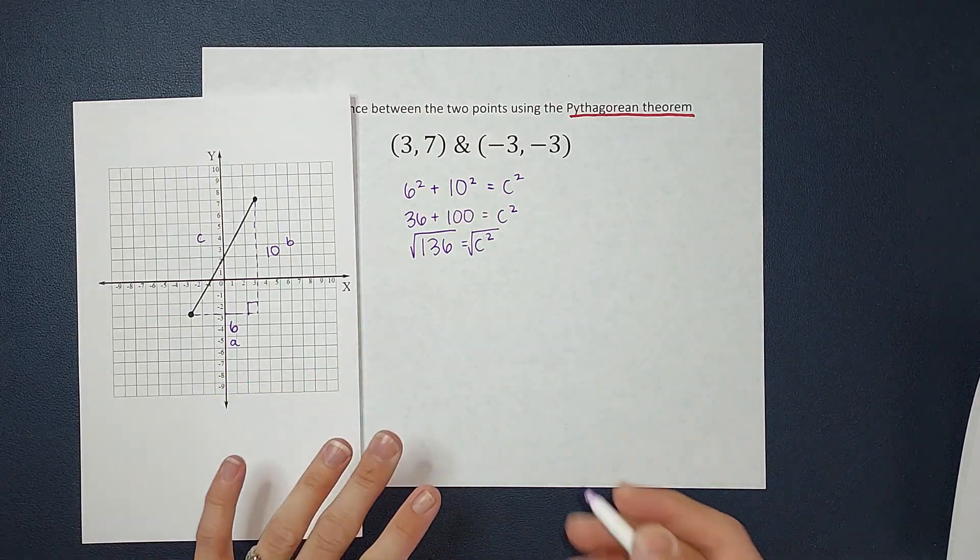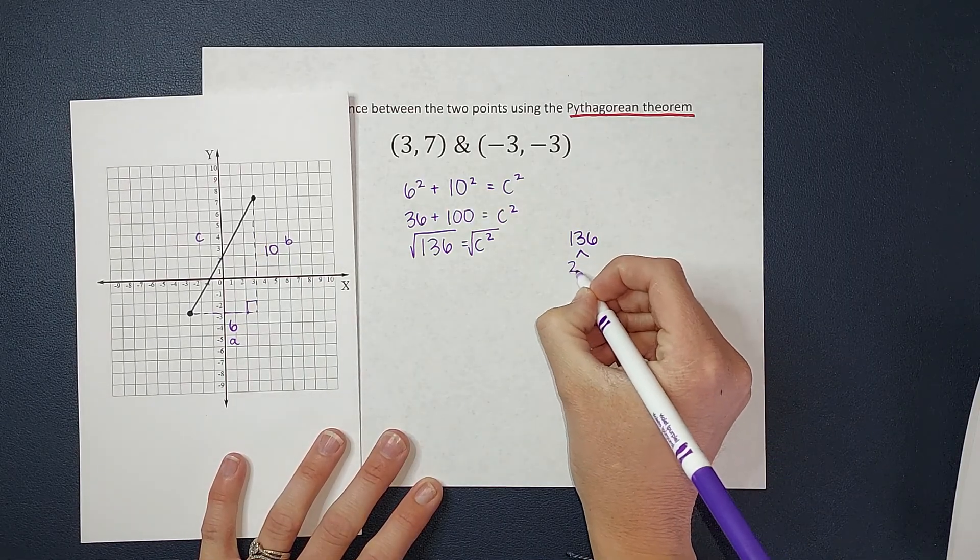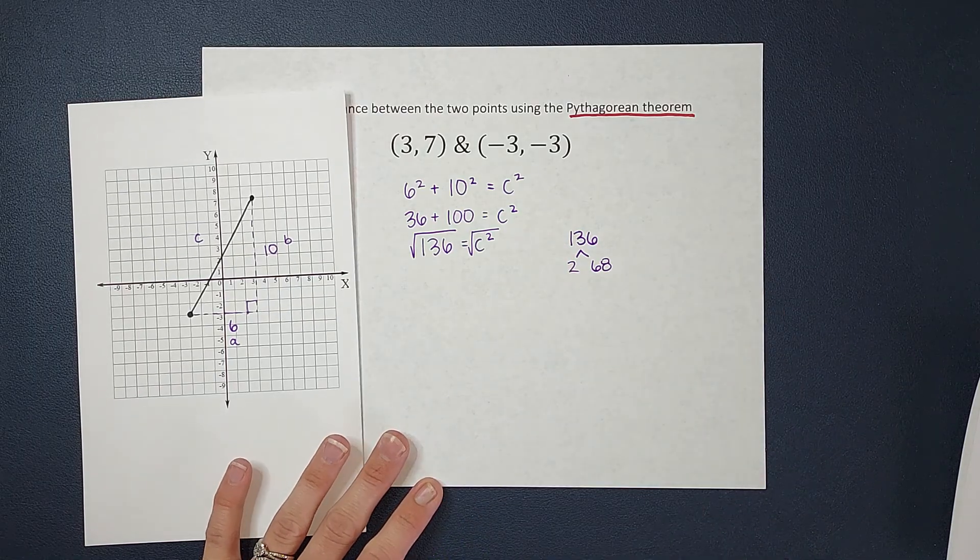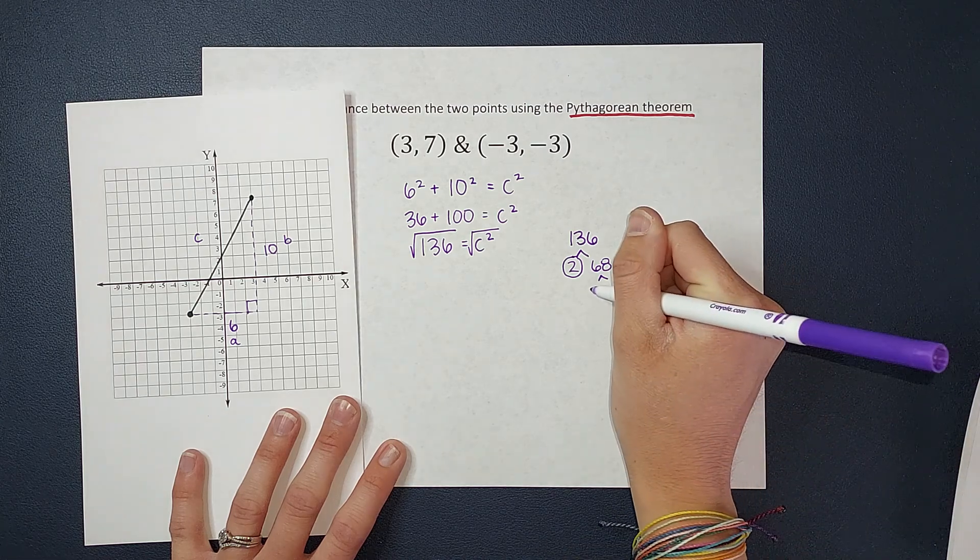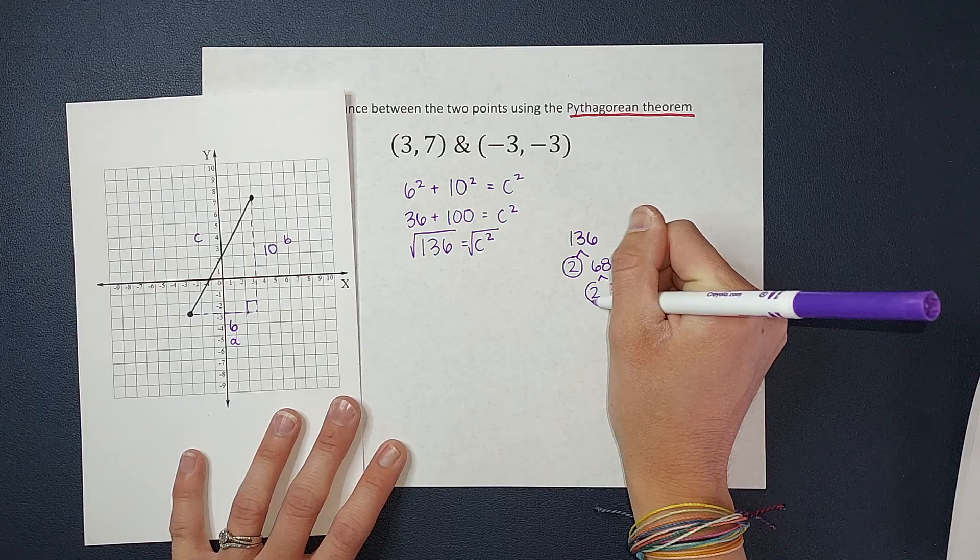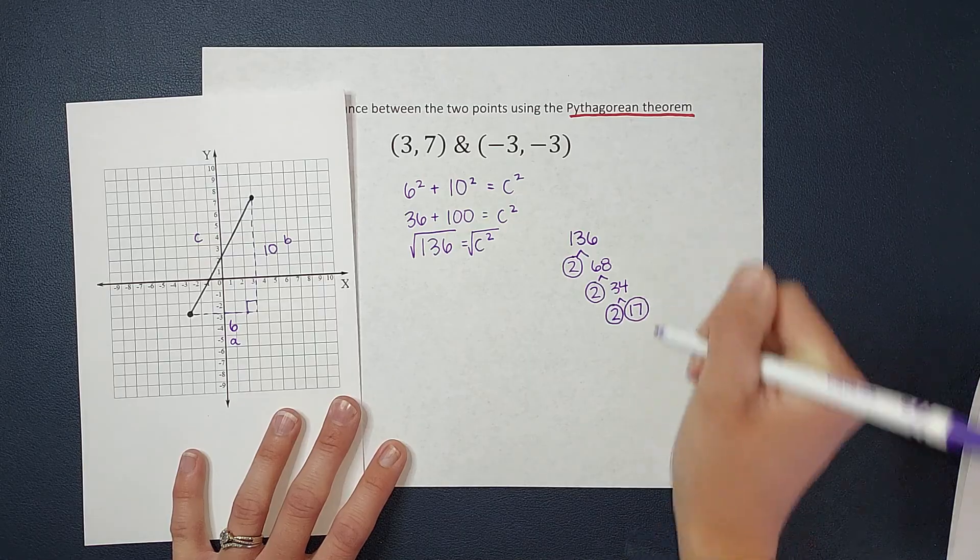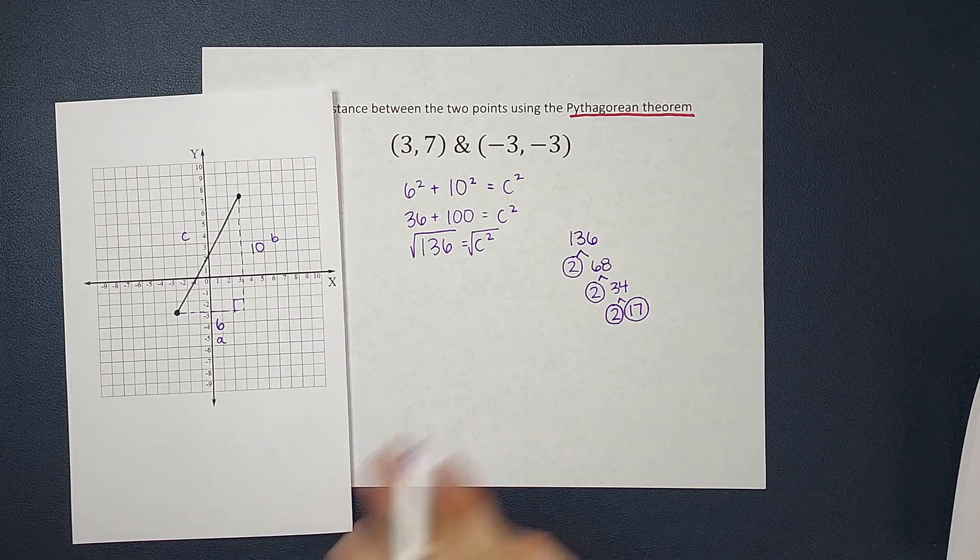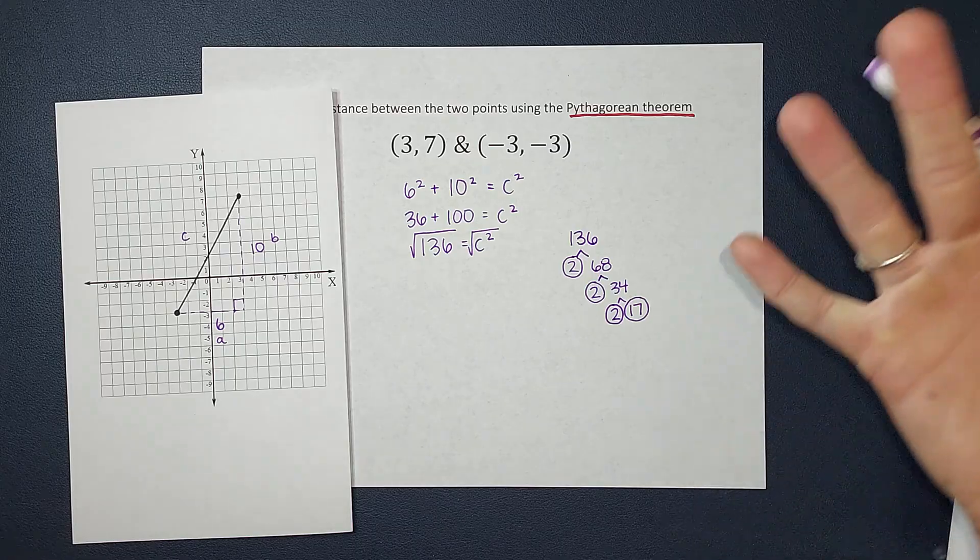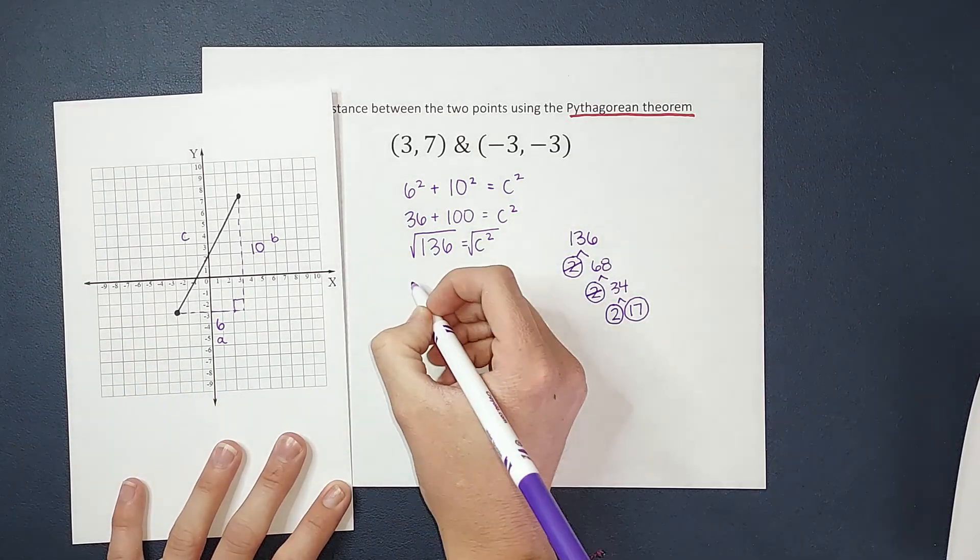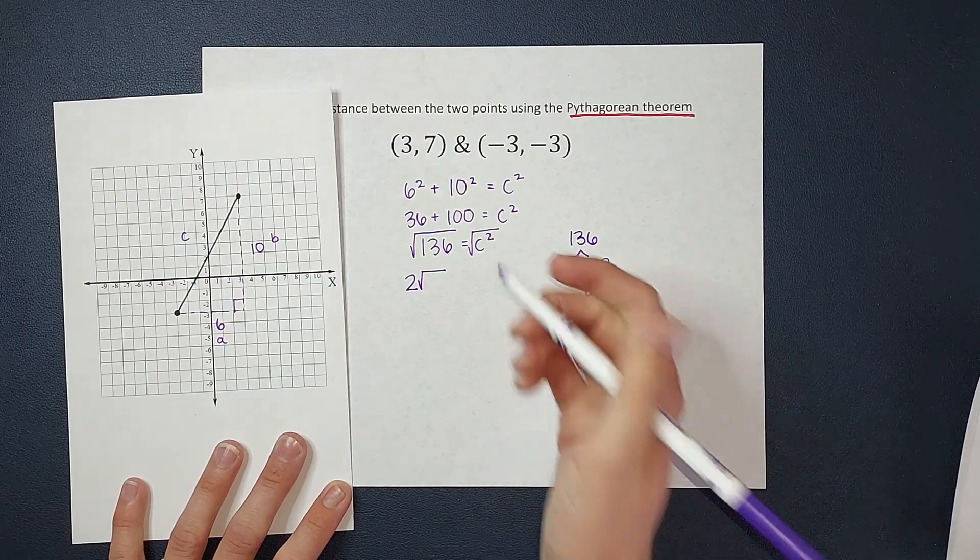If you need a review on how to do this, I'll link one in the corner, but what we're going to do is take 136 and break it down as much as we can. I know that 2 × 68 gives me 136, and I'm going to circle any prime numbers. 2 is a prime number. Then I'm going to break down 68, so that's 2 × 34. I'm going to circle the 2 because it's prime. 34 can still be broken down to 2 × 17, and both of those are prime, so I'm going to circle both of them. Then we're looking for any doubles. I have two 2s, which means I can pull a 2 out of that 136, because 2 × 2 is 4, and the square root of 4 is 2. So I'm going to pull that out, so I'm going to have a 2 on the outside of my radical, and then what's still left inside of the radical is 2 × 17, which gives me 34.